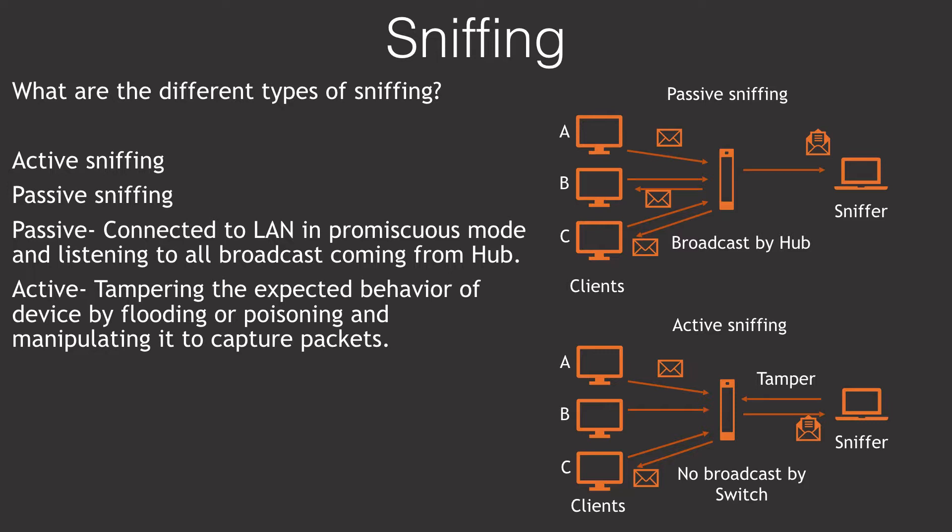Now you know what passive sniffing is, so let's understand active sniffing. To advance our networks we stopped using hubs and started using switches, which do not broadcast like hubs. Switches allow connected devices to communicate but in unicast mode, meaning no other device other than the intended one will receive any communication packages. This intelligent decision the switch makes is based on its knowledge of which IP address belongs to which physical address, or MAC address. It keeps this IP and MAC combination information in a table known as the ARP table.